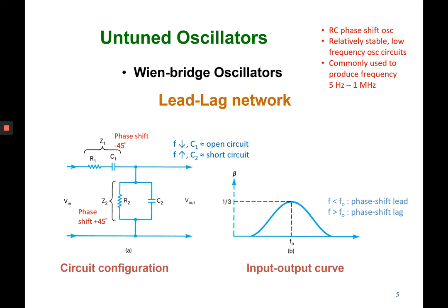Wien Bridge will produce the frequency or the signal with high frequency. It uses RC, the capacitor and resistor phase shift oscillator. It's relatively stable, low frequency circuit, and commonly used to produce between 5 hertz to 1 megahertz of frequency signal. Wien Bridge has two components, what we call as lead-lag network.